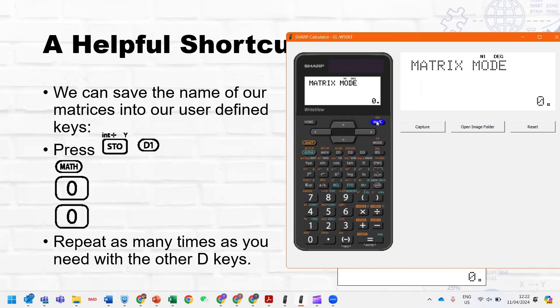From there, I would just like to show you a quick and helpful shortcut. So we have these D1, D2, D3 keys, and these are called user-defined keys, and what they allow you to do on the ELW516, and this calculator, the 506T, is that you can store any function into them.